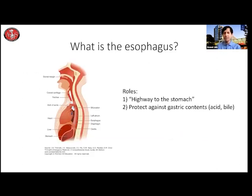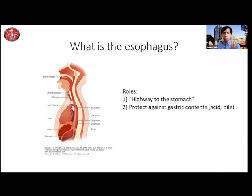Before we get into the disease states of the esophagus, it's important to understand what the esophagus is. This is a sagittal view of the human thorax. At first glance, you don't actually see the esophagus — the esophagus is normally a very thin and collapsed organ, so it's actually difficult to see. Right in front of the spine, you will see a slender tube that dives down and meets with the stomach. This is the esophagus, wedged between the airway and the spine, behind the heart, with the two lungs on either side.